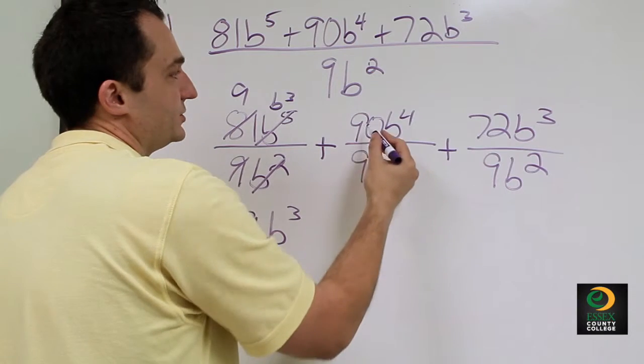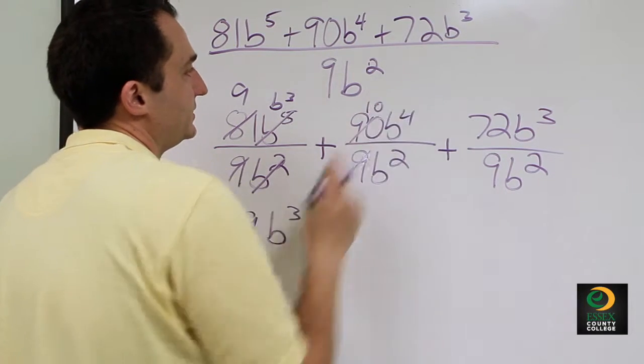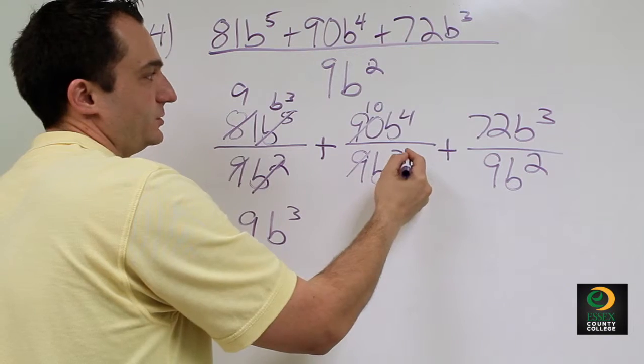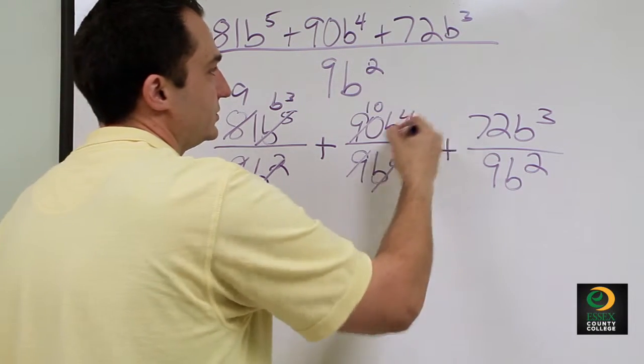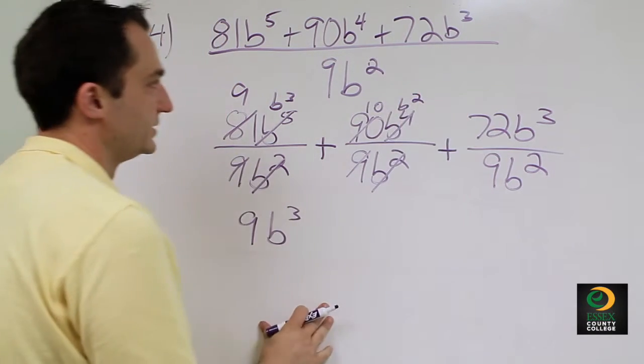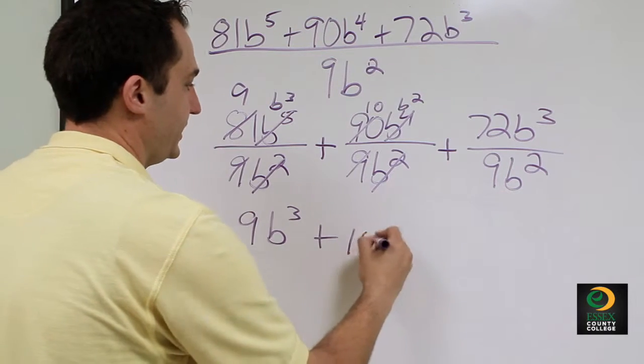Second fraction: 9 goes into 90 ten times. 4 minus 2 gives us 2. The 4 is bigger than the 2, so the B² stays on top. So plus 10B².